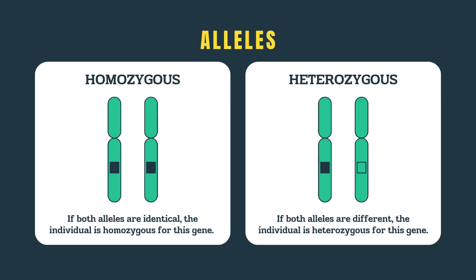Alleles can be homozygous or heterozygous. If both alleles are identical, the individual is homozygous for this gene. If both alleles are different, the individual is heterozygous for this gene.